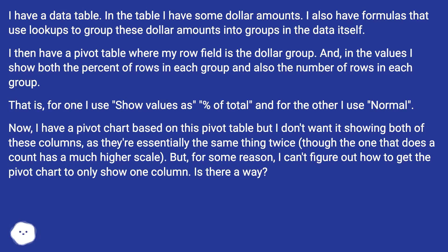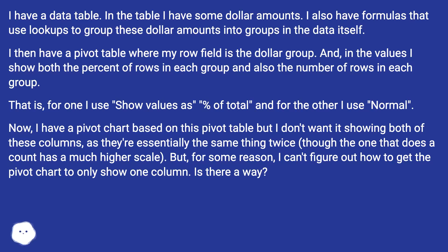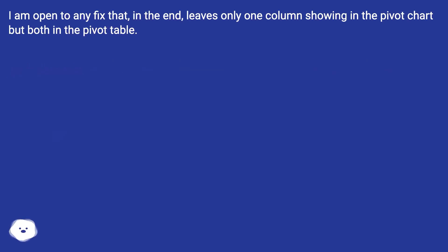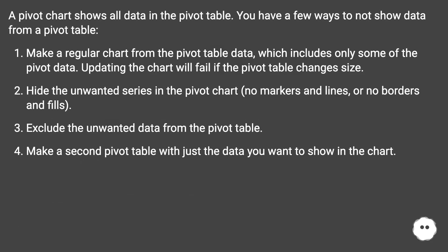I have a pivot chart based on this pivot table, but I don't want it showing both columns, as they're essentially the same thing twice, though the count column has a much higher scale. I can't figure out how to get the pivot chart to show only one column. Is there a way? I am open to any fix that leaves only one column showing in the pivot chart but both in the pivot table.